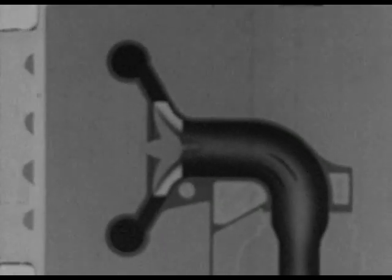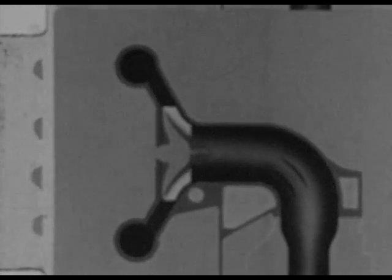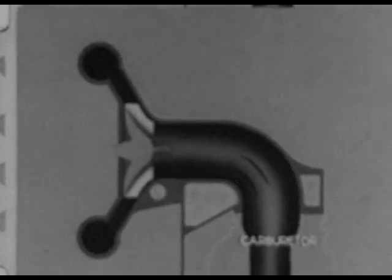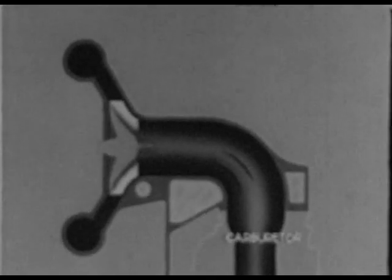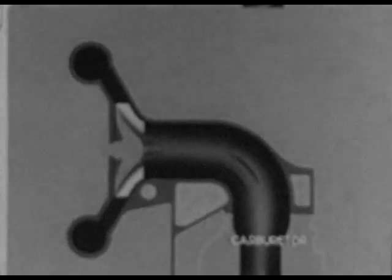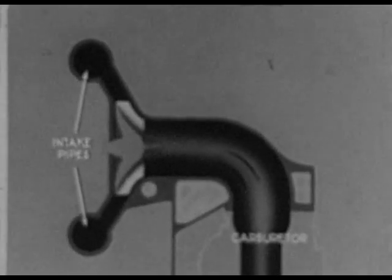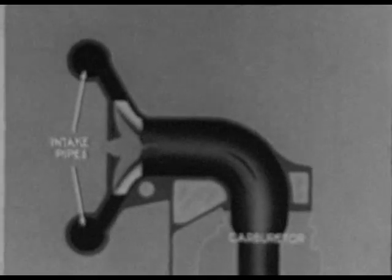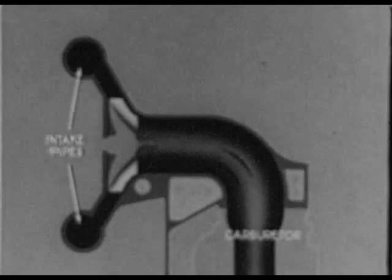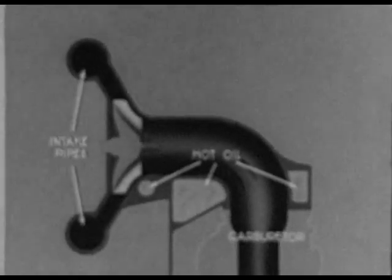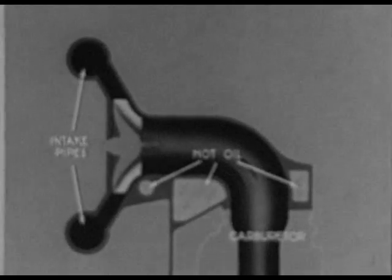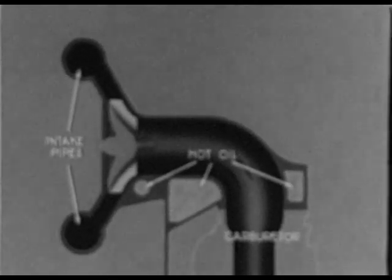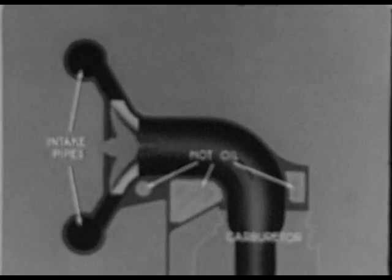In this radial engine, the air-fuel mixture or charge spreads through the supercharger and spiral baffles, which direct the charge into the individual intake pipes. In such an arrangement, an individual intake pipe may be considered as the intake manifold. Hot oil scavenged from the engine is passed through a jacket surrounding the manifold, and by heating, promotes vaporization of the fuel.